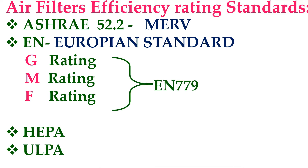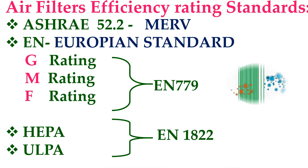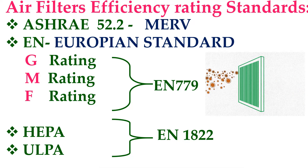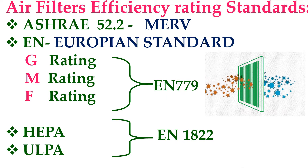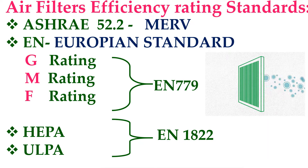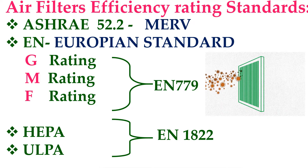Second is the EN standard. EN means European standard. The ratings based on EN standard are G, M, and F, which fall under standard EN 779. HEPA and ULPA filters are under standard EN 1822.